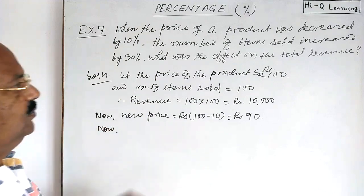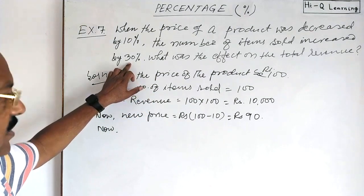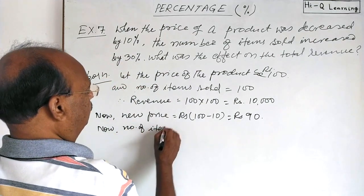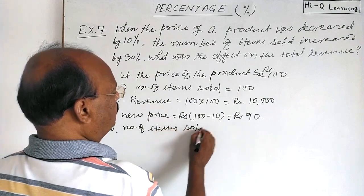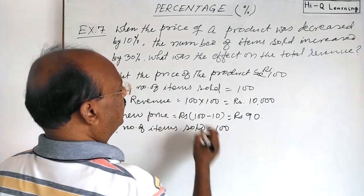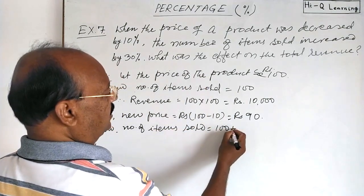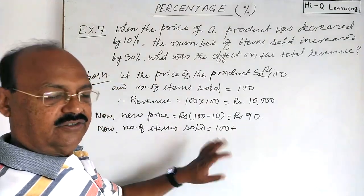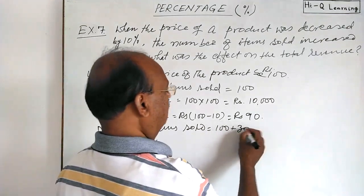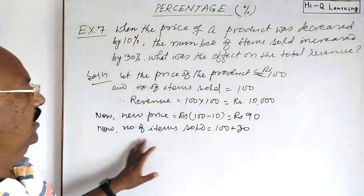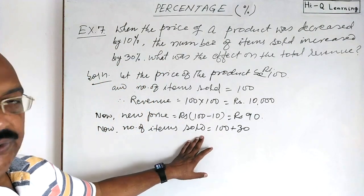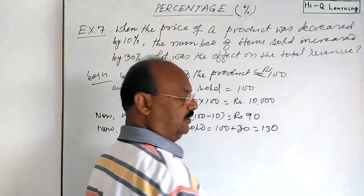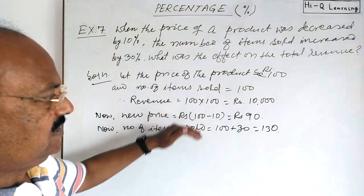Now the number of items sold will increase by 30 percent. It was 100, and 30 percent of 100 is 30. So 100 plus 30 will be the new number of items sold, which is equal to 130.